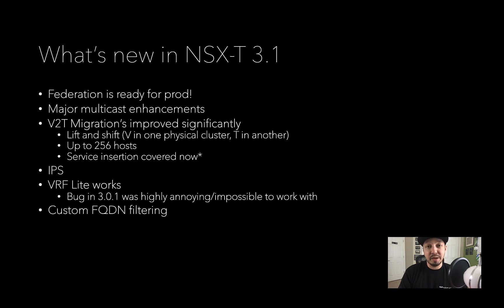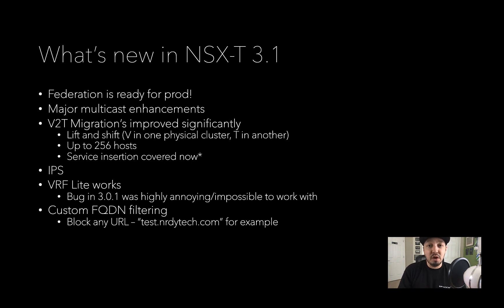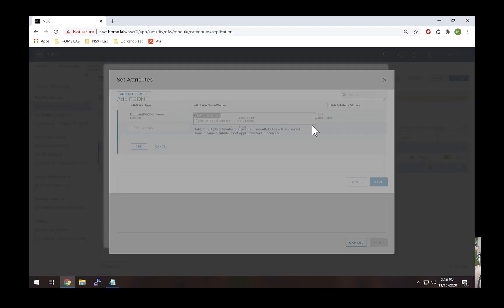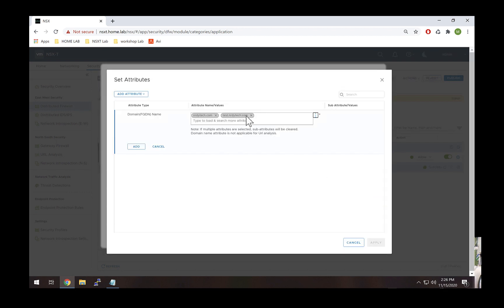The next thing I'm really excited about is you can now do custom FQDN filtering. Previously, NSX-T allowed you to filter on maybe 60 or 100 URLs — all the common ones you'd see like Facebook, Google, YouTube, that sort of thing. But you couldn't do custom URLs. Well, now with 3.1 you can. So you could, for example, say I want to block test.nerdetech.com — I do not own that domain, but now I think I should probably go buy it. A lot of customers have been asking for that for a while.